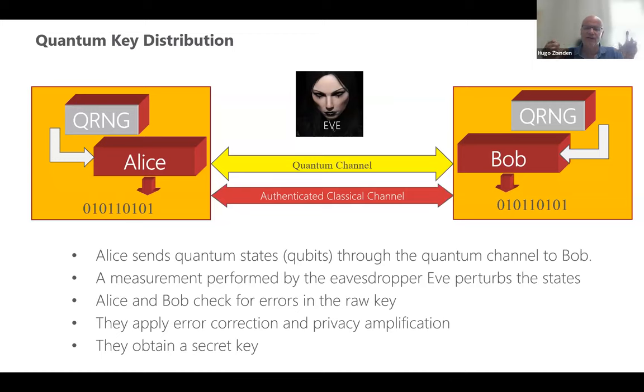The idea is that if there is an eavesdropper in between, since we are working with single photons, a measurement of the eavesdropper would perturb this exchange of photons and Alice and Bob can realize that. For doing this, after this exchange, they check for errors. They compare part of this string of bits and look if there are errors. In principle, if there is no eavesdropper, there are no errors. Of course, in practice, there are always a few errors. They have to apply error correction, and based on the errors they detect, they can calculate the potential information an eavesdropper might have. They apply privacy amplification, which brings this information for eavesdropper down to zero. At the end, they end up with a secret key.